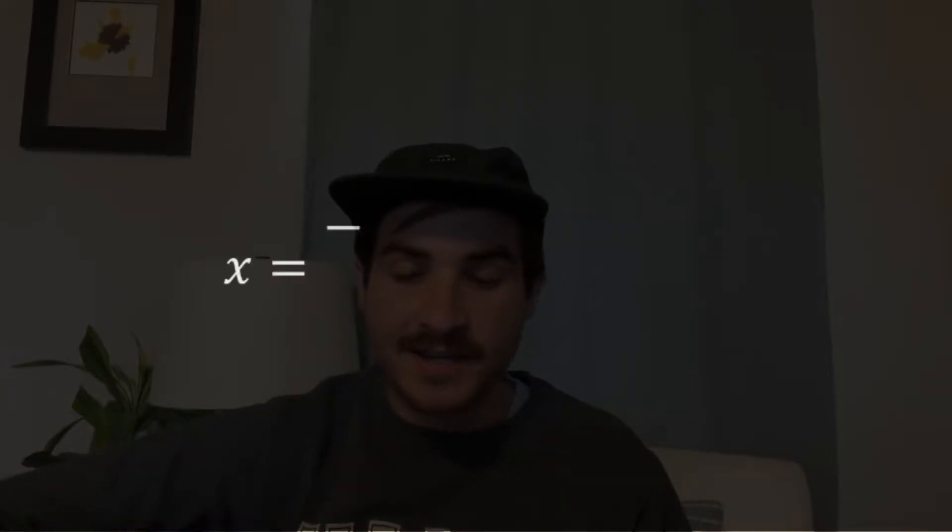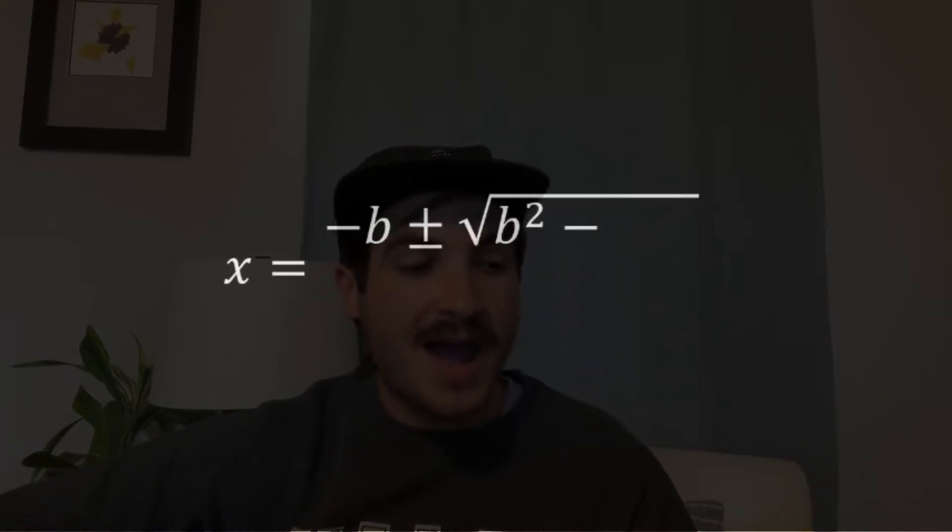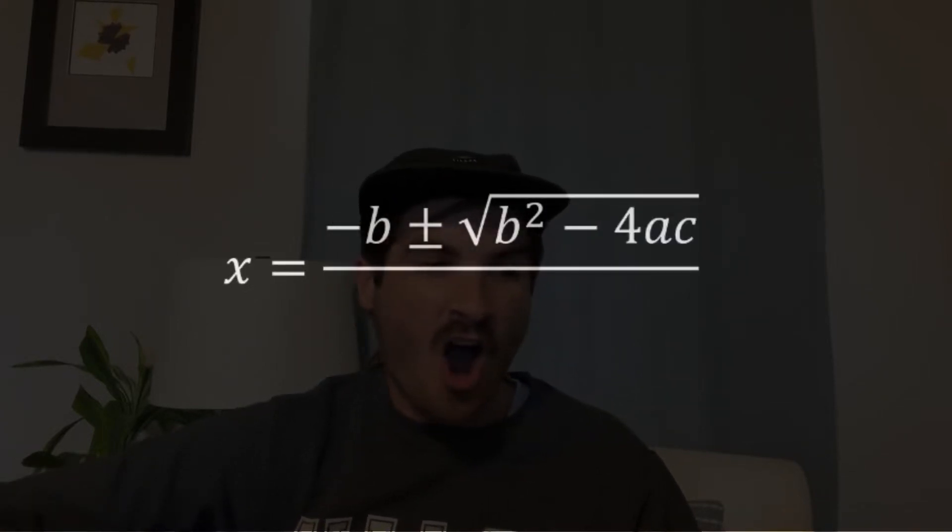Ooh, ooh, ooh, ooh, ooh, ooh. X equals negative B plus or minus the square root of B squared minus 4AC. All of them over 2A.